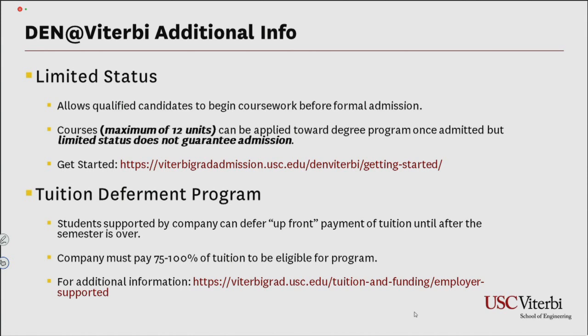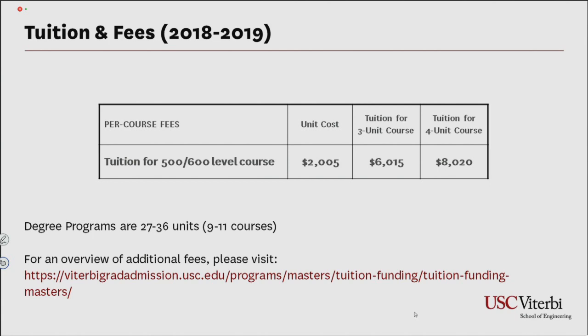The Tuition Deferment Program is a great opportunity to avoid out-of-pocket expenses if your company is paying 75% to 100% of your tuition — students supported by their company can defer the upfront tuition payment until after the semester ends. In terms of tuition, the current per-unit cost for the 2018–2019 academic year is $2,005. Most Astronautical Engineering courses are three units, making the cost per course $6,015, with additional fees depending on whether you take classes on campus or online.